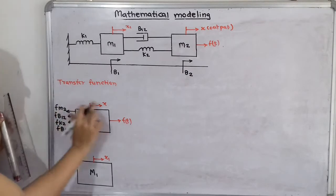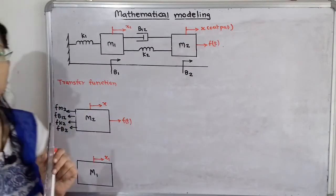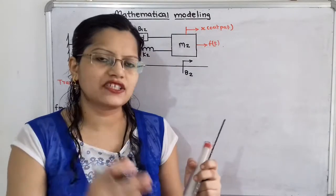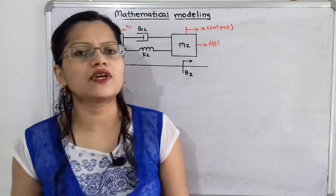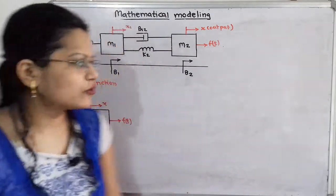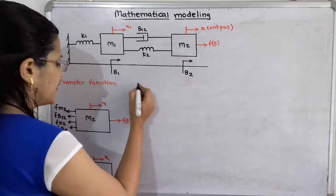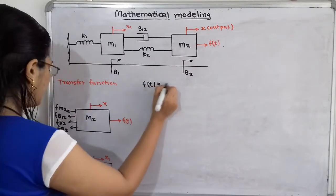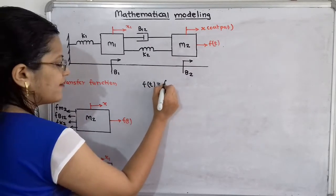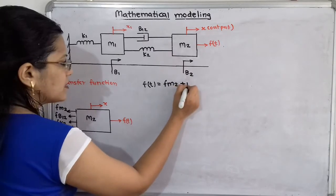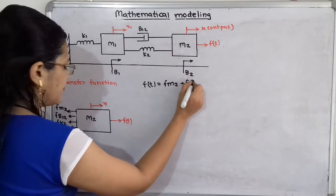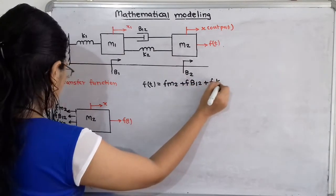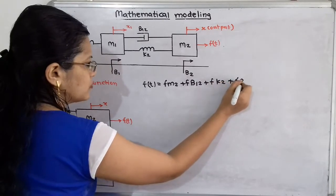These are the action and reaction forces. According to Newton's second law of motion, the action force equals the sum of reaction forces. So: F(T) = Fm2 + Fb12 + Fk2 + Fb2.